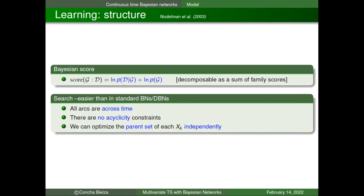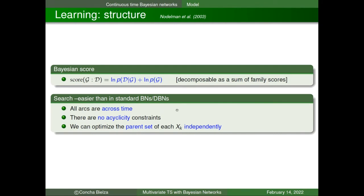For structure learning we use a Bayesian score based on the marginal likelihood and a prior over structures. This score is decomposable as a sum of family scores — a variable and its parents — making optimization easier. The search is easier than in standard Bayesian networks because we allow only arcs across time, we allow cycles, and we can optimize the parent set of each X_k independently.